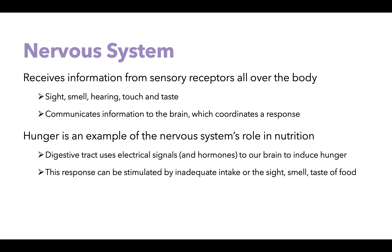Now the nervous system. The nervous system receives information from sensory receptors all over the body and runs primarily through electrical signaling. We have our five senses — sight, smell, hearing, touch, and taste — and our body communicates that information to the brain, which coordinates a response. An example relevant to nutrition is hunger. The digestive tract uses electrical signals as well as hormones, sending them to the brain to induce hunger. This response can be stimulated by inadequate intake, or just the sight, smell, and taste of food — if we don't eat for a while, the digestive tract senses this and sends signals to the brain telling us we need food.